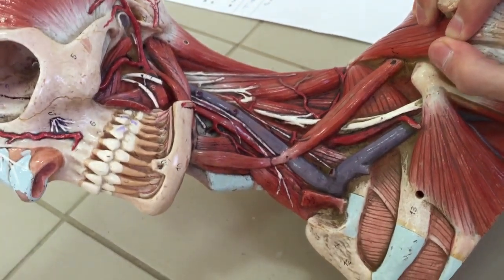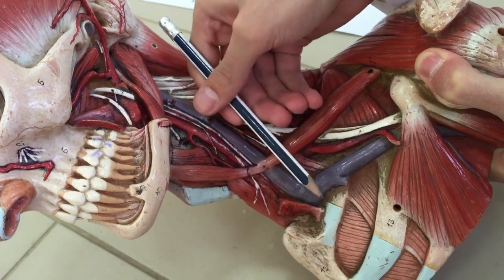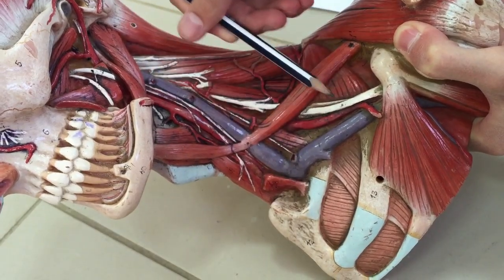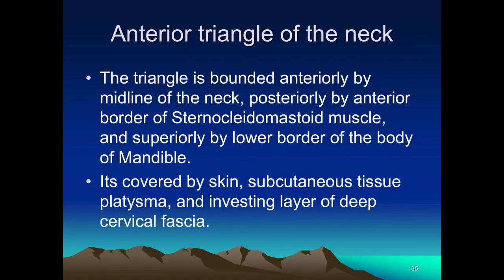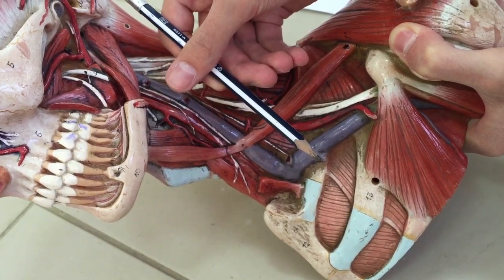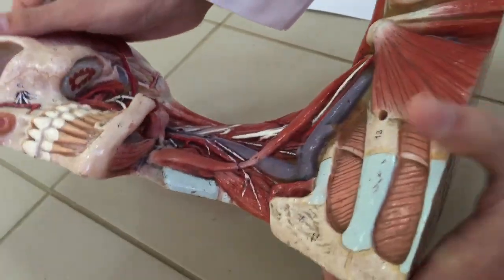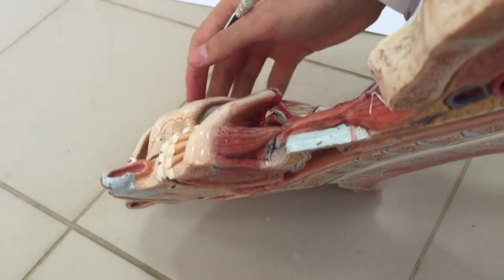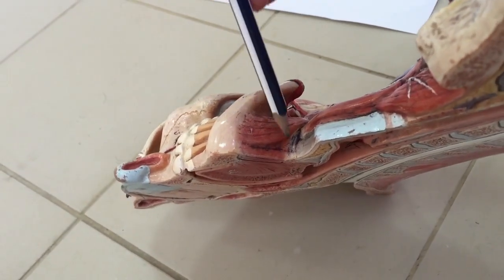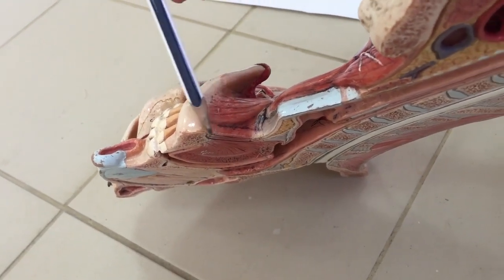Now moving to the anterior triangle of the neck. The anterior triangle is subdivided into four separate triangles. The submental triangle is very small; it is bounded inferiorly by the hyoid bone, laterally by the anterior belly of the digastric, and anteriorly by the midline.